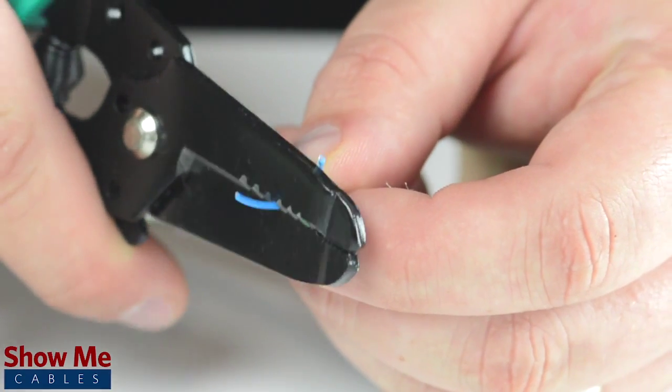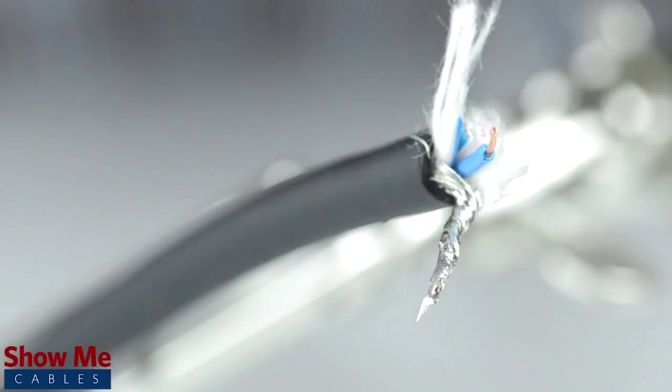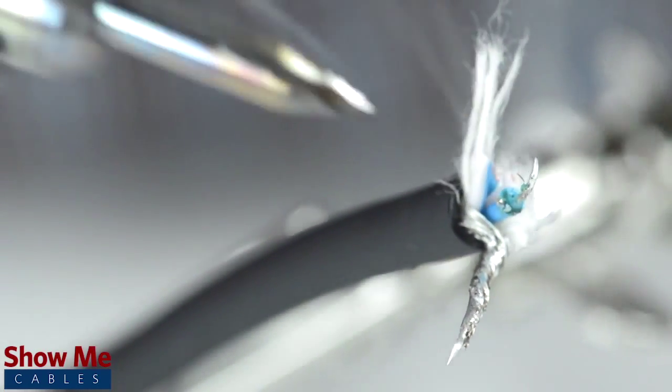Strip the jacket around the center conductor. Tin the center conductor and shield by adding solder to the ends of each wire. Tinning helps make a more lasting and professional bond.